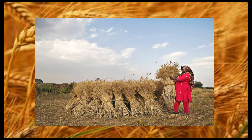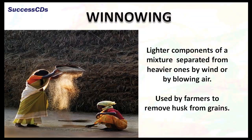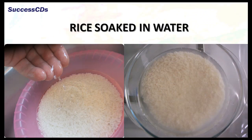Have you ever visited a wheat or paddy field after the crop has been harvested? The grains are attached to the stalks, which are put together in bundles. The process of separating grains from stalks is called threshing. Threshing can be done by beating the stalks with sticks on the ground, by allowing bullocks to trample on the stalks, or by using machines. When lighter components of the mixture are separated from heavier ones by wind or by blowing air, it is called winnowing. It is usually used by farmers to remove husk from grains after threshing.